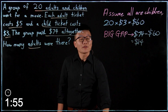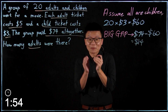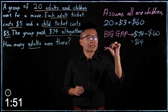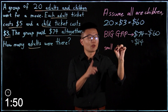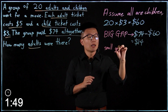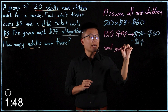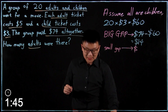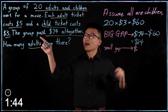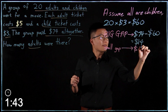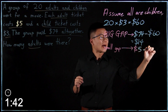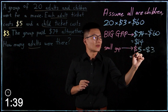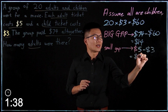Next, we are going to find the small gap. The small gap means the difference between one child ticket and one adult ticket. So it will be $5 minus $3, which is equal to $2.